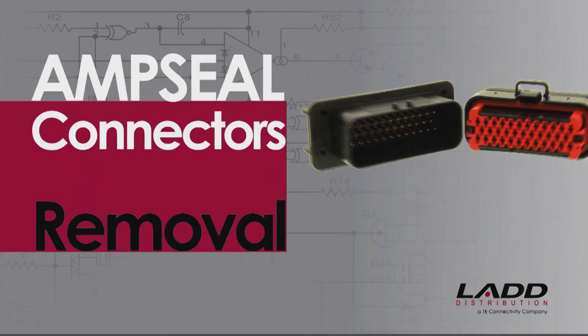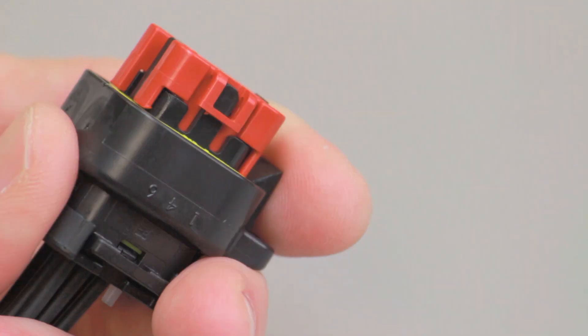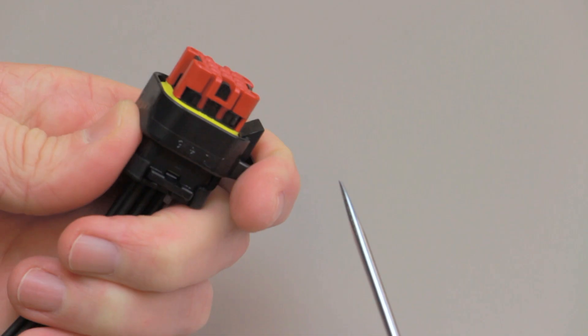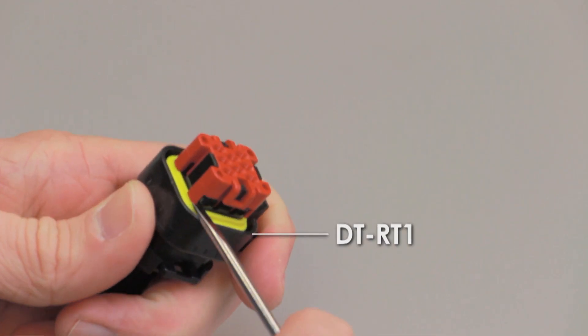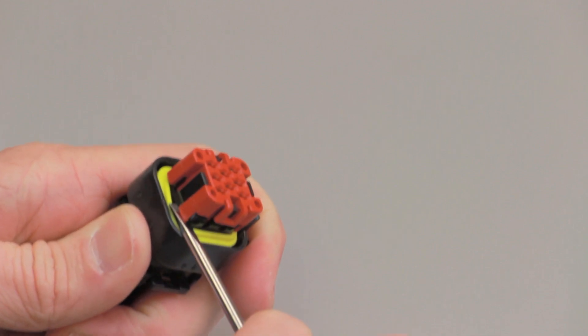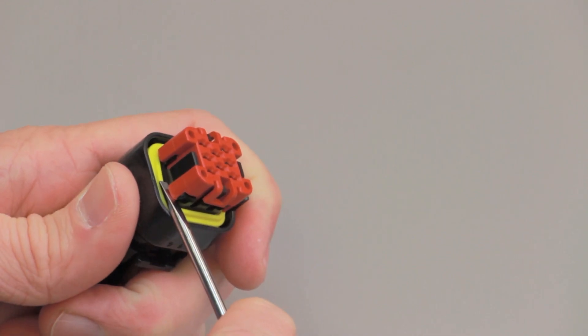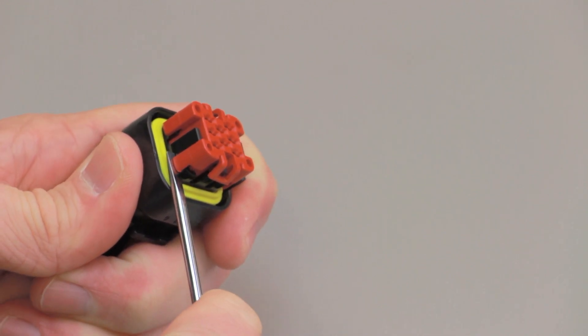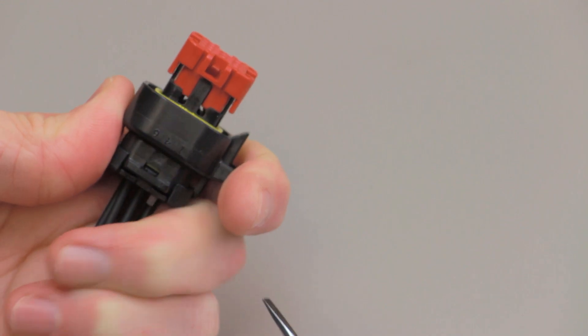Amp seal contact removal. Connectors must be unmated to remove the contacts. Begin by inserting the tip of a DT-RT1 removal tool or a screwdriver between the edge of the receptacle contact housing and one corner of the wedge lock. Gently pry the edge of the wedge lock until it is released but not completely removed from the housing.